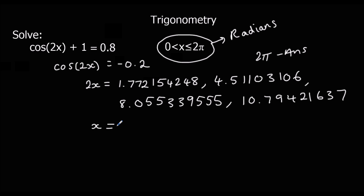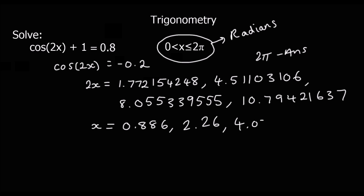Now I've got four values for 2x, and I halve them all to get x, giving answers to three significant figures. Half of 1.772... is 0.886; half of 4.511... is 2.26; half of 8.055... is 4.03; and half of 10.794... is 5.40. Those are our four answers for x between 0 and 2 pi.